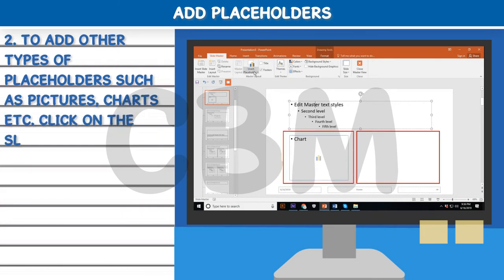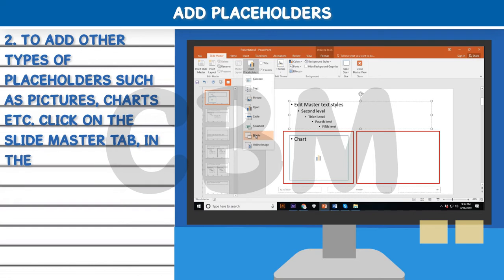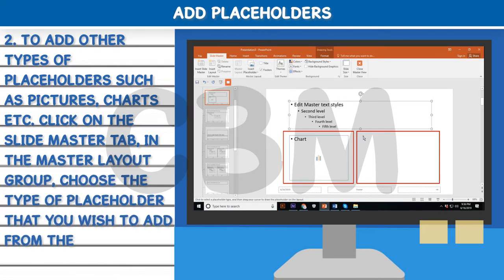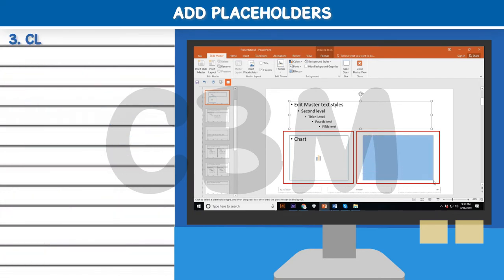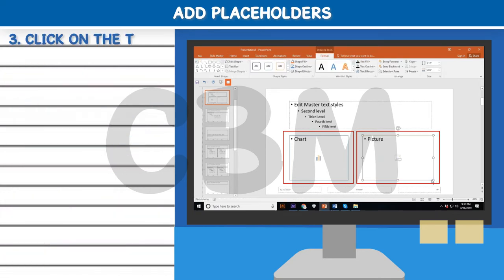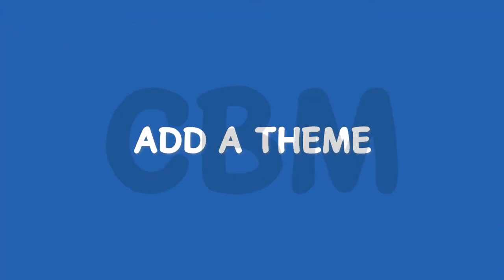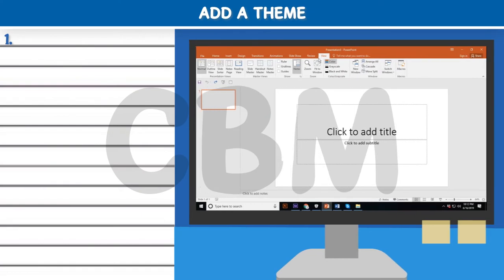Step two, to add other types of placeholders such as pictures, charts, etc., click on the Slide Master tab. In the Master Layout group, choose the type of placeholder that you wish to add from the Insert Placeholder options. Step three, click on the Title and Footer checkbox to add them.